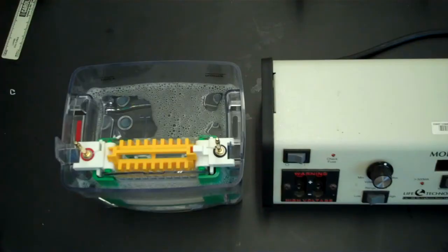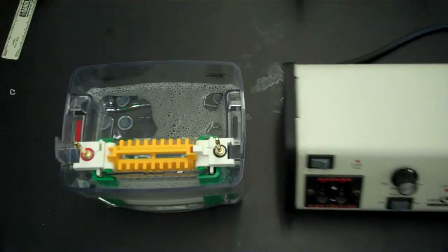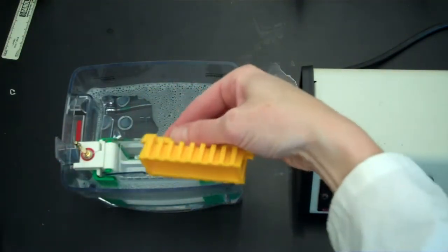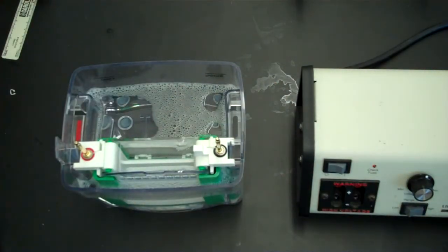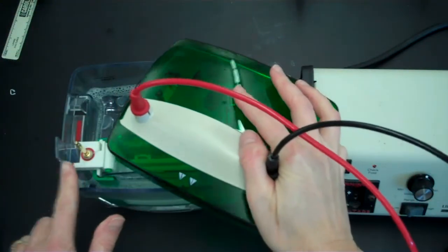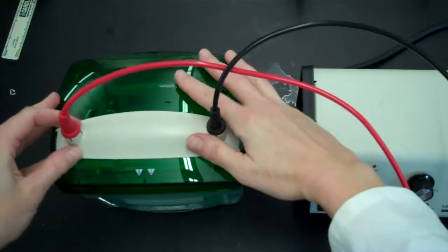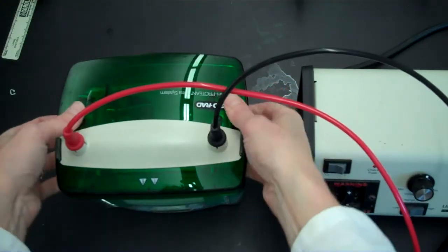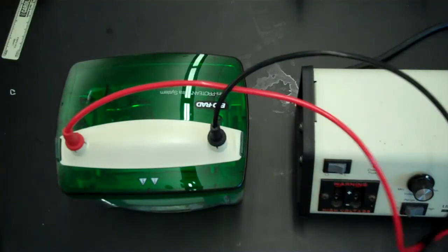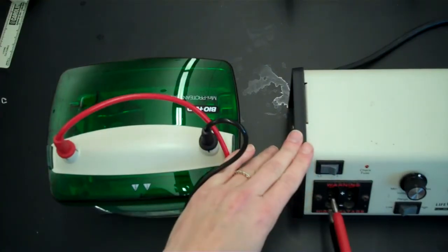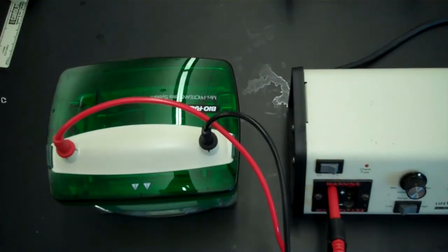Once all your samples are loaded, you are ready to turn on your SDS page. And so the first thing that you are going to do is remove the loading guide. Next, put on the top, aligning red to red and black to black. It should snap on nicely. And then you are going to put the leads into your power supply. Again, red to red and black to black.